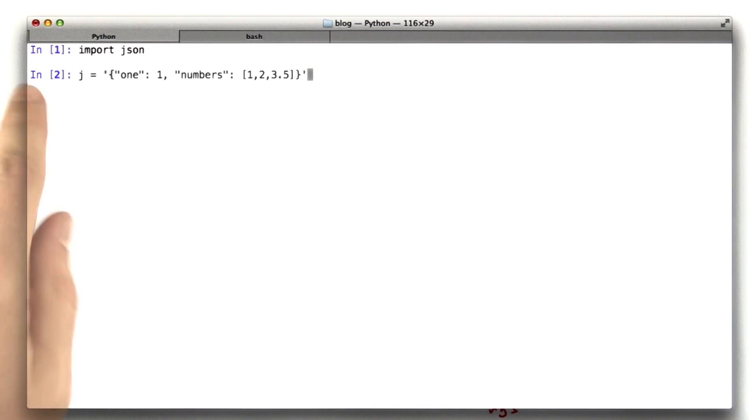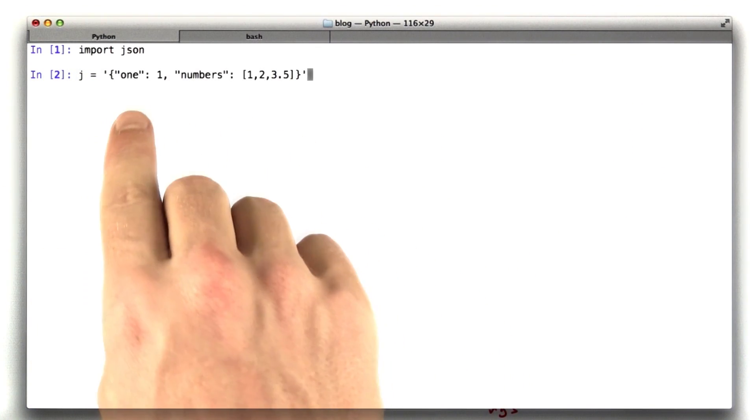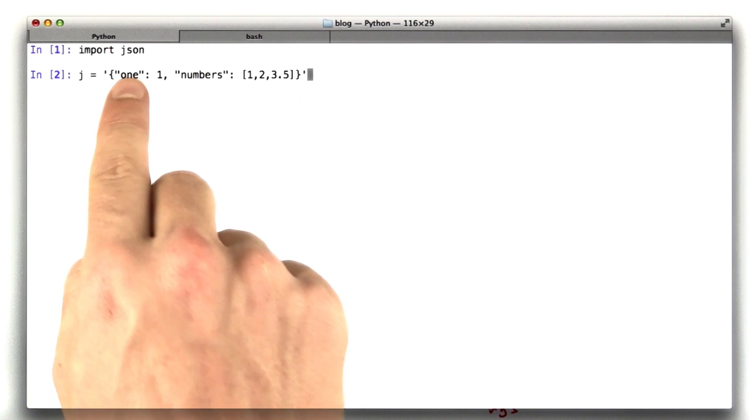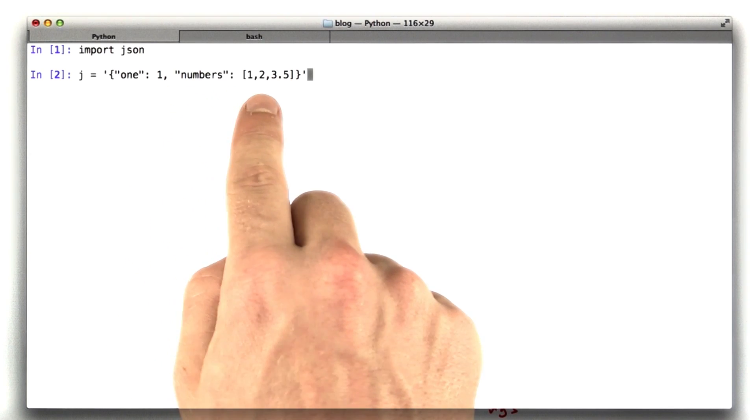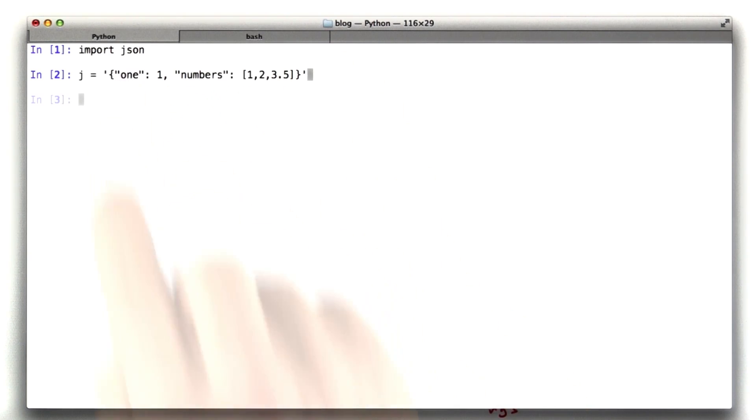If we were to make a JSON string in Python here, let's call it J. So if we were to take a string representing some JSON, in this case it's basically a dictionary with 2 keys, 1 and numbers. The value for 1 is 1, and the value for numbers is the list 1, 2, 3.5.